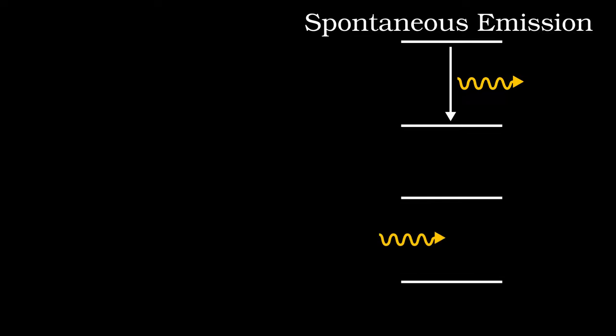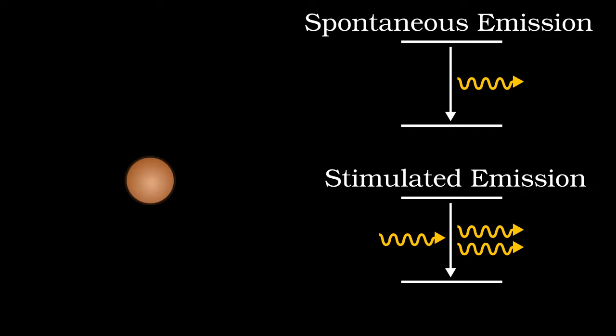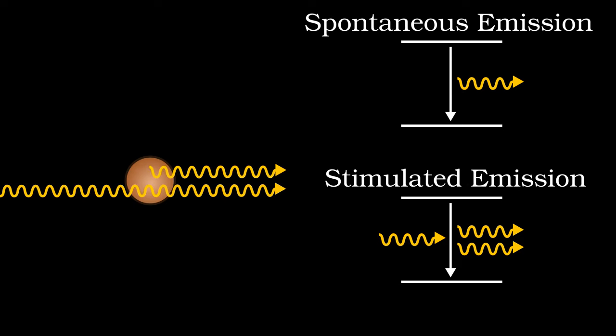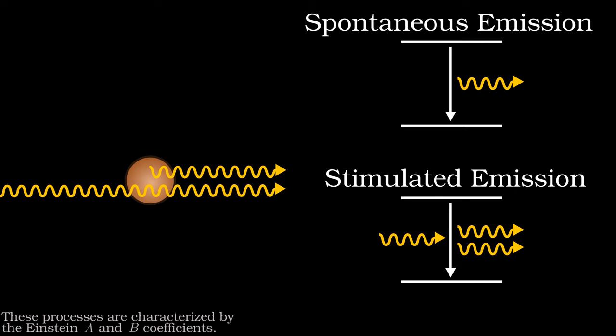But if there's already a photon with the right energy passing by the atom, it might cause stimulated emission of a new one. The oscillating electric field of the original photon interacts with the electron leading to the emission. Because of this, stimulated emission is no longer random. The two photons are synchronized in time and moving in the same direction. Also, like all quantum processes, stimulated emission is not guaranteed but merely has a probability to happen. The energy of the photon has to match the gap between energy levels very closely, which typically means you have to have atoms of the same element for this to work. The energy levels of sodium are different to neon, and so on. At the end of all that, you just need to understand that an excited electron will emit a photon by spontaneous emission if it's left alone, or by stimulated emission if an existing photon comes in.